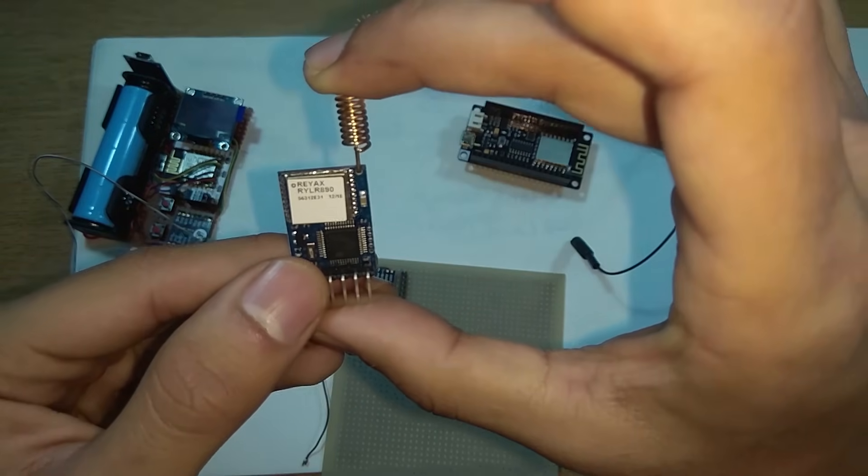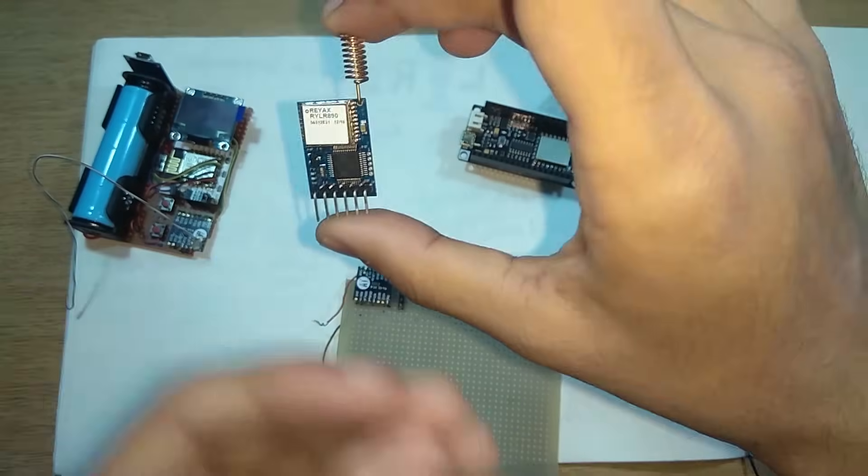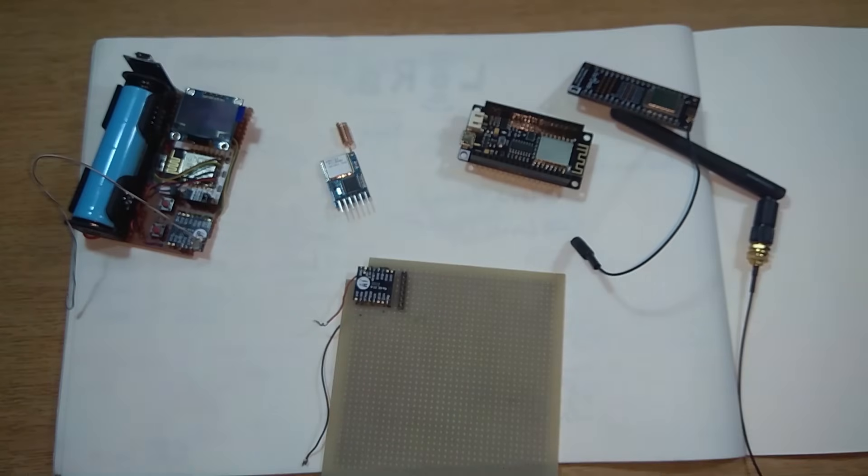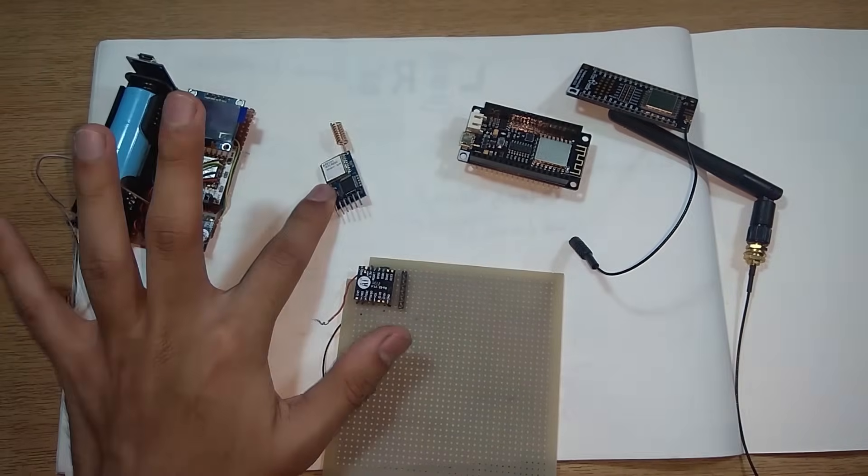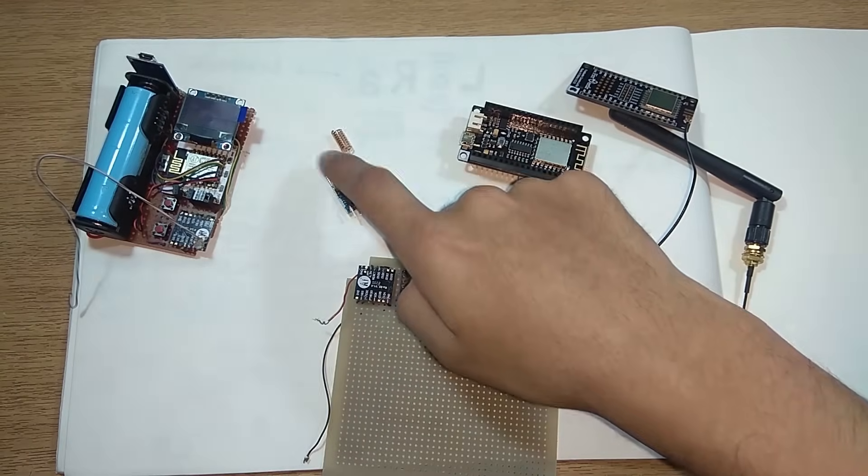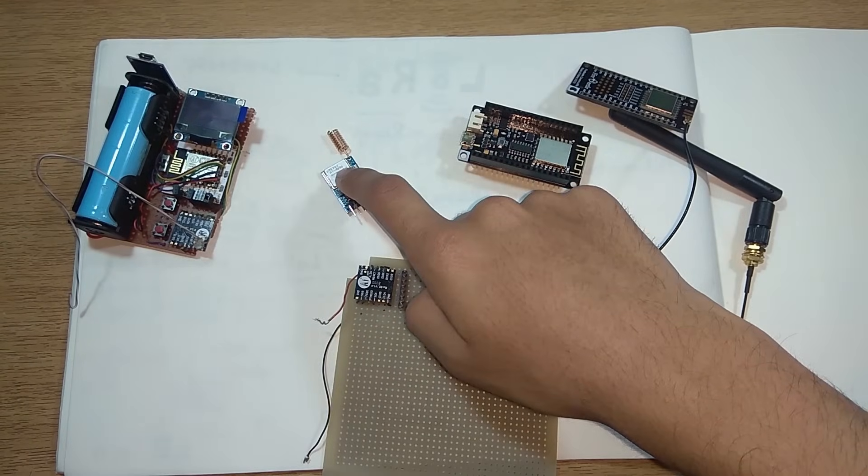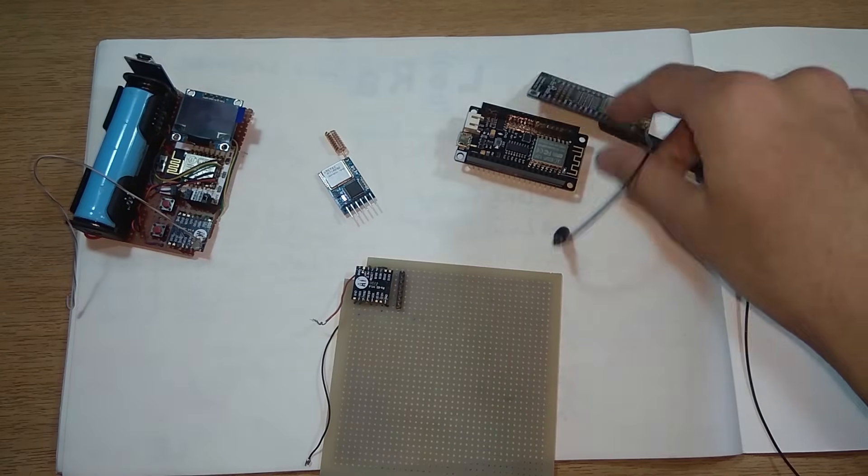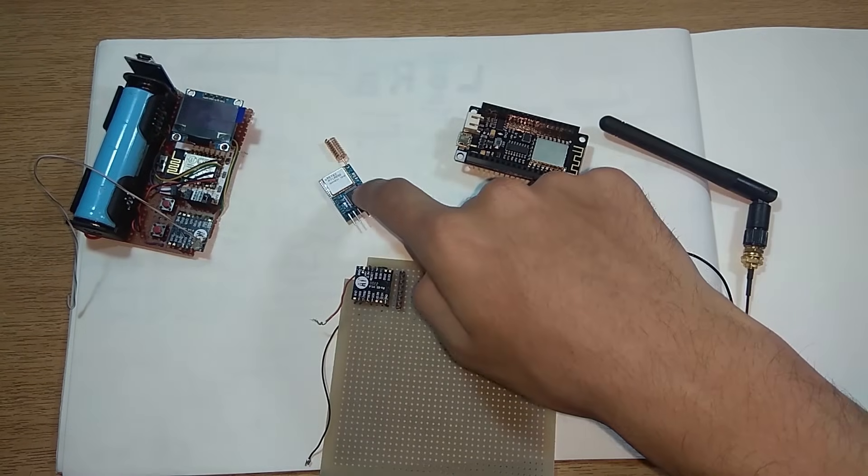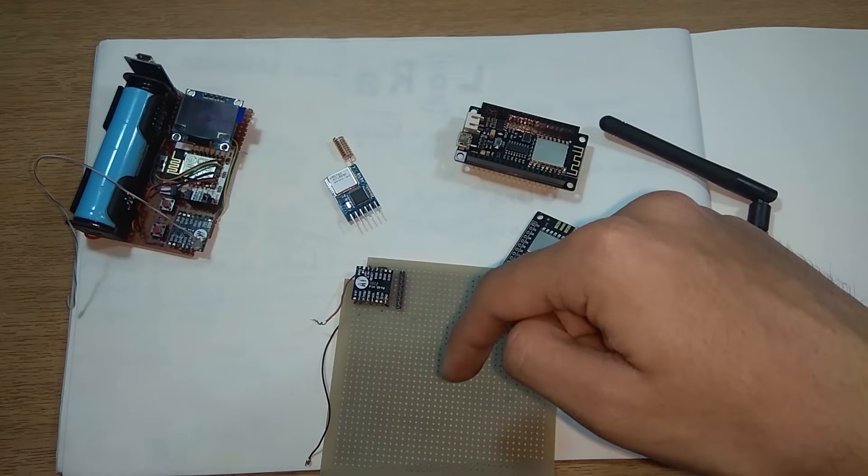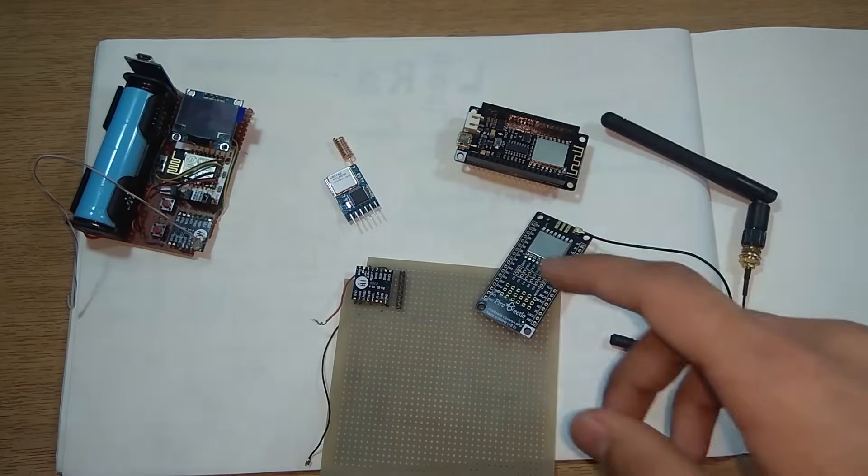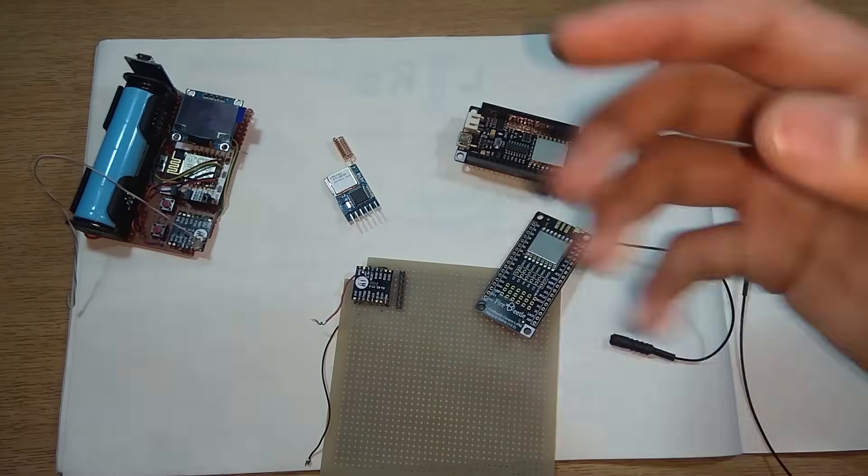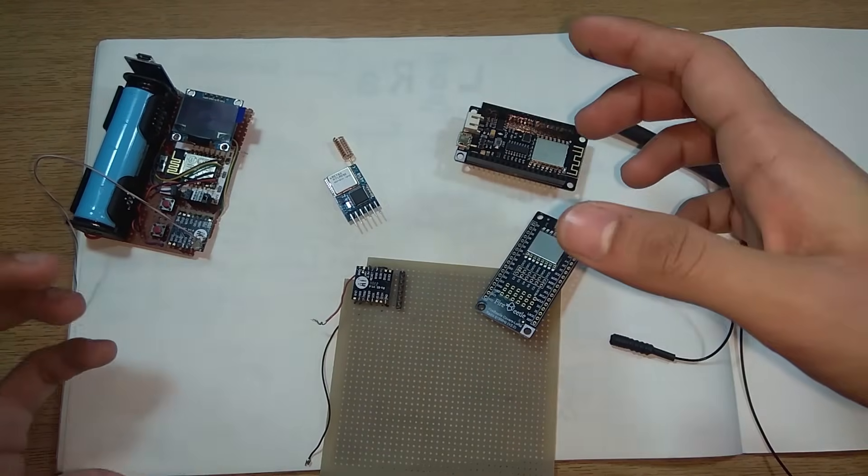This has a microcontroller built in, so you can use this directly as a UART device. There is RX and TX pins which directly sends and receives data. You can control this device using AT commands. This is a module from Reyax. I will mention both the links for the FireBeetle from DFRobot and this Reyax module in the description below.